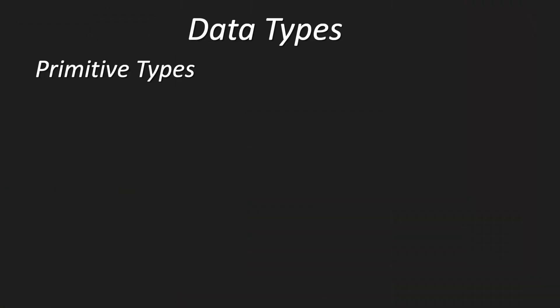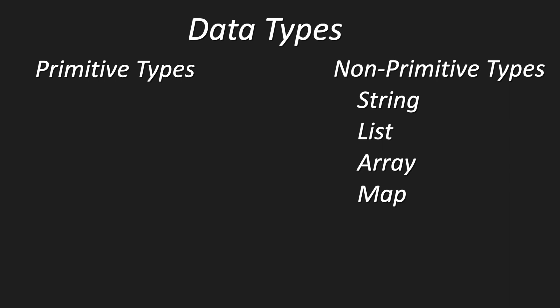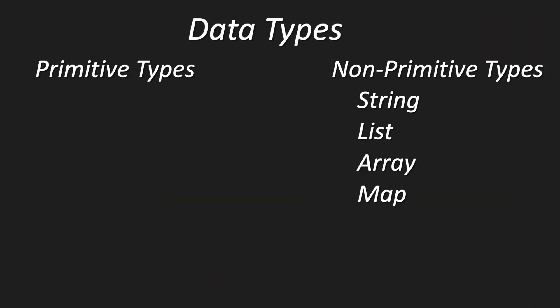Now I want to tell you what data types actually are. In Java, we distinguish between primitive and non-primitive data types. Non-primitive data types are, for instance, string, list, array, map, and so on. Pretty much any data type you write yourself is a non-primitive data type — so if you write your own map implementation, that is your own non-primitive data type. The primitive data types are the ones that are built into Java.